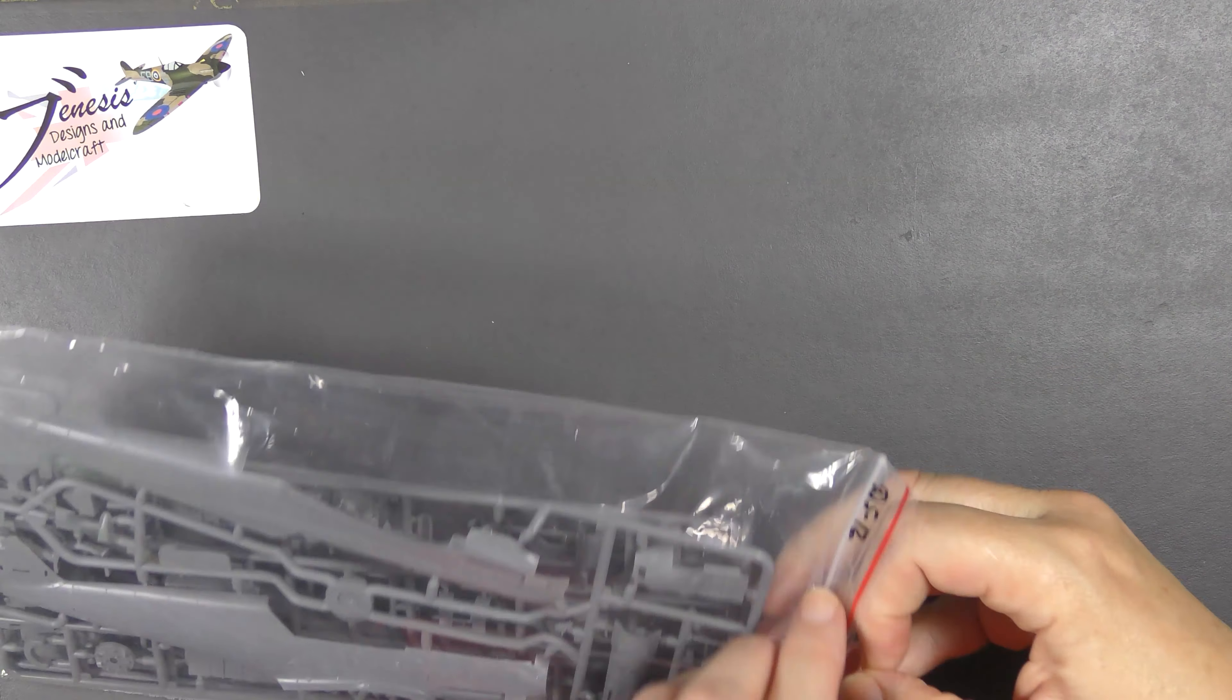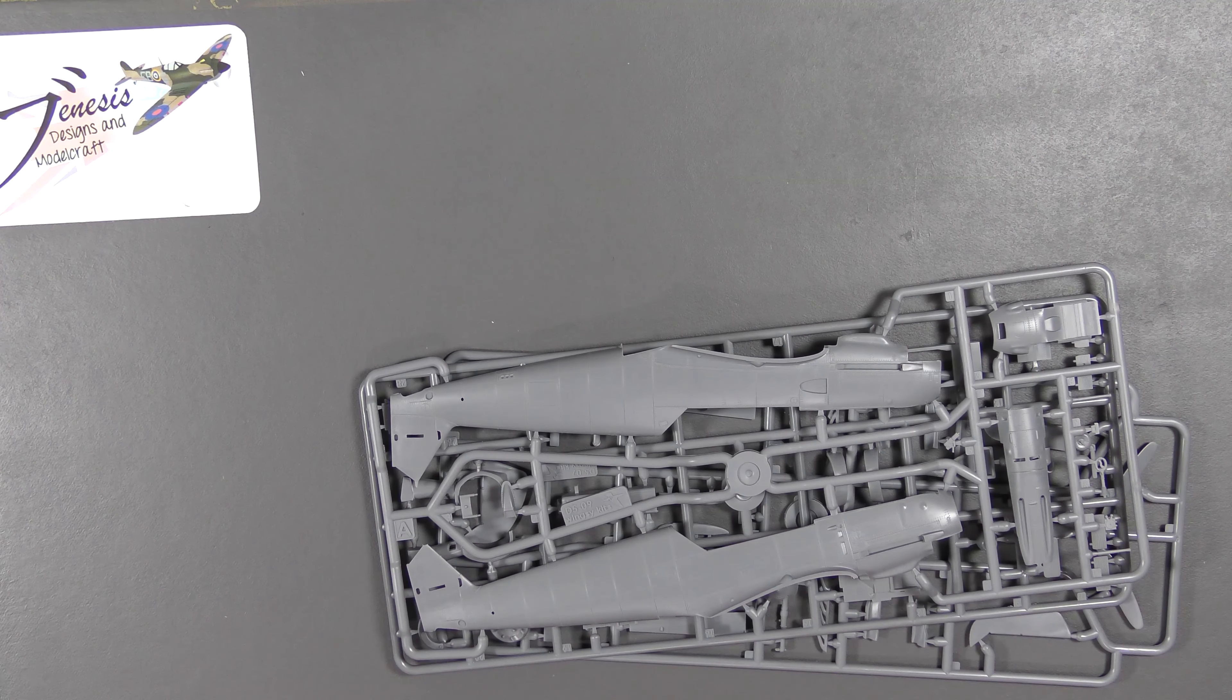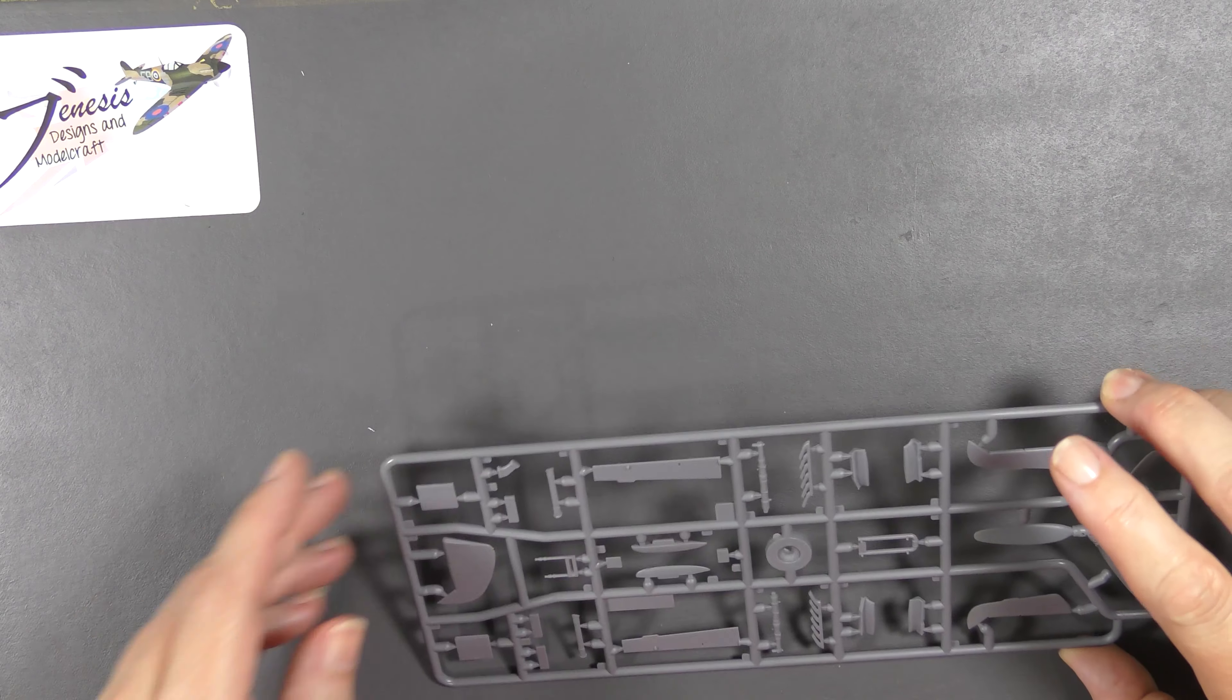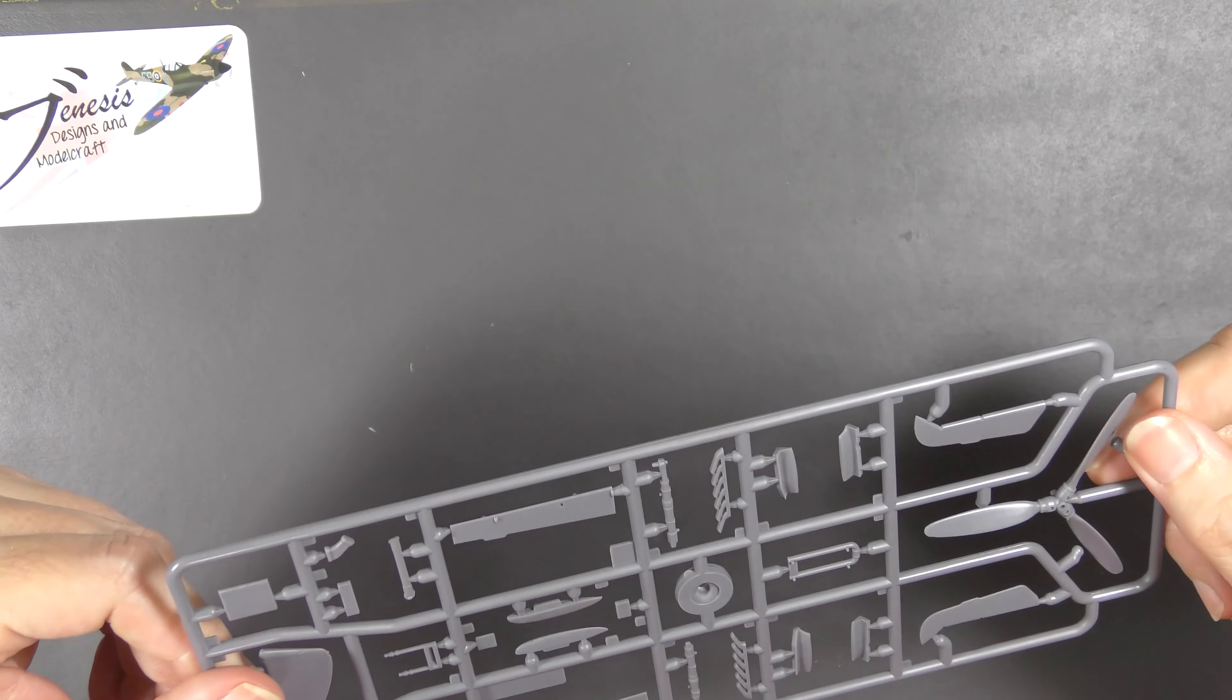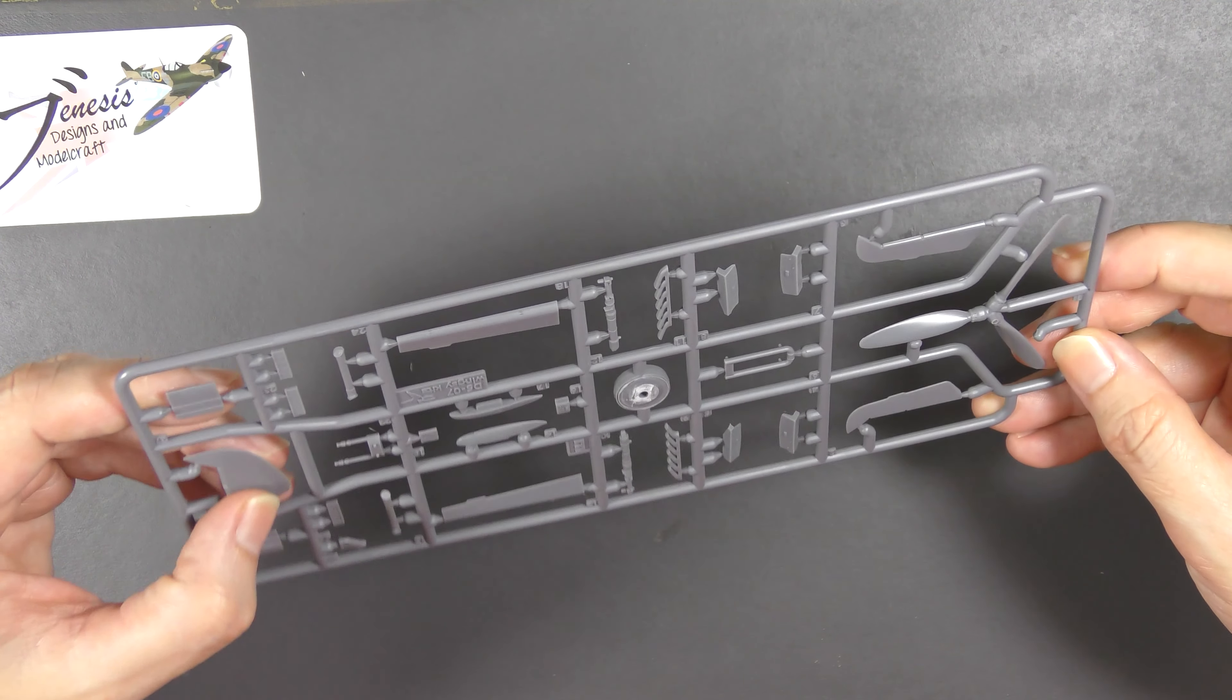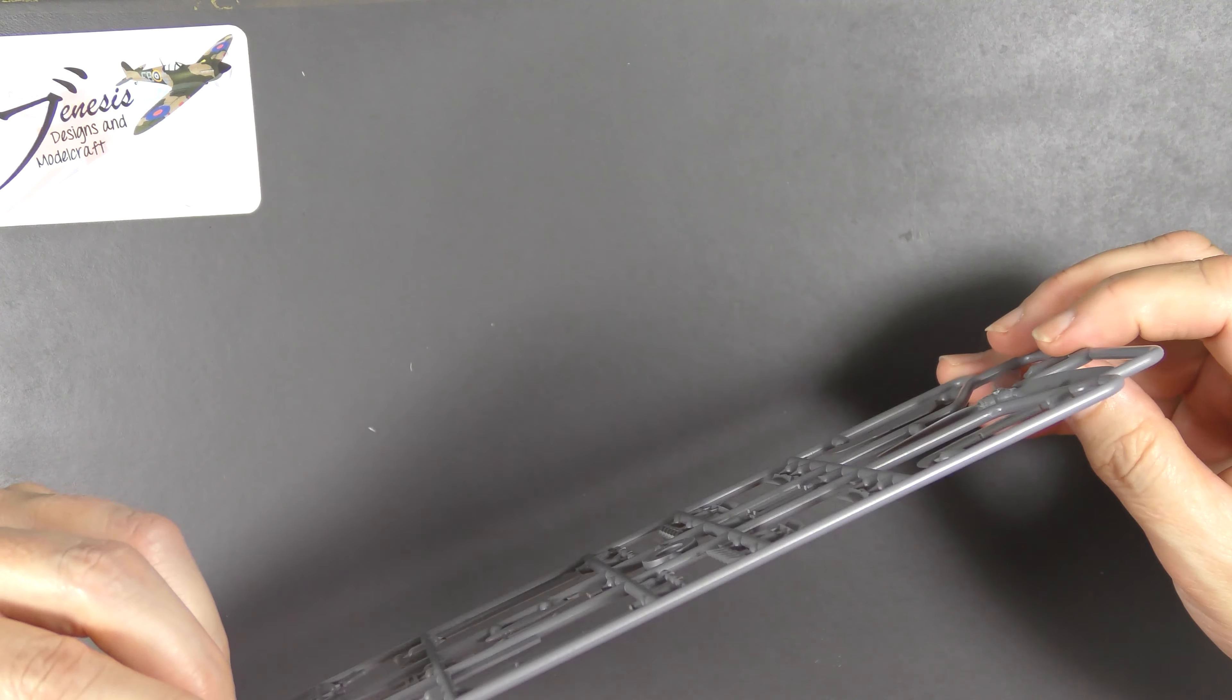In the second bag, which also has three sprues, quite a lot of parts here. On this one, ailerons with very subtle fabric effect, the rudder, struts for tail plane braces, exhausts, radiator grills, propeller obviously, and elevators with cow-mounted machine guns.